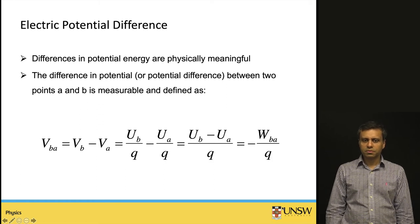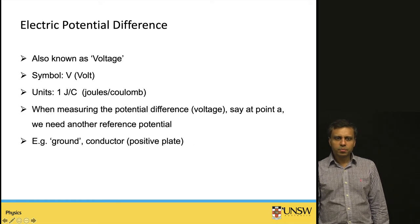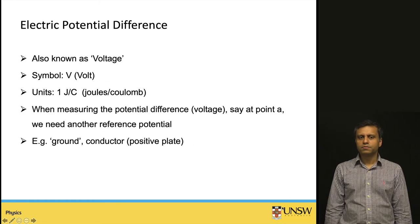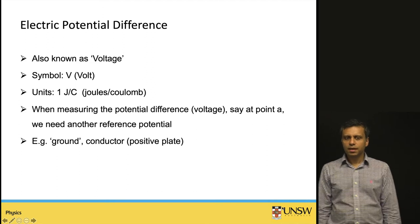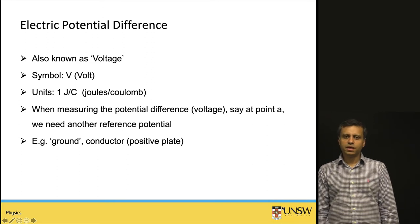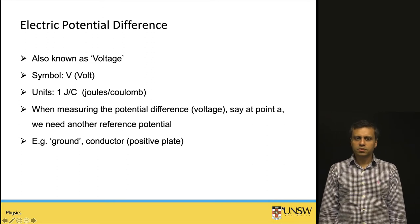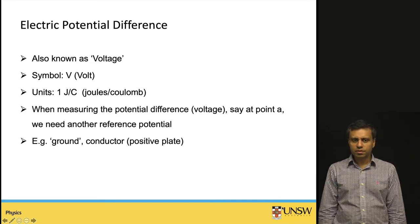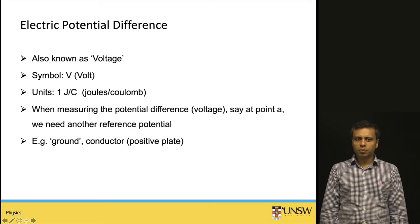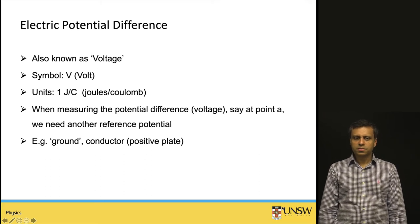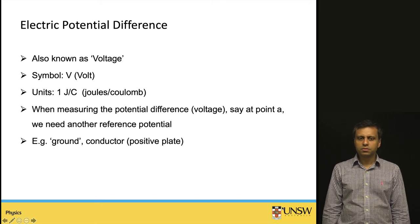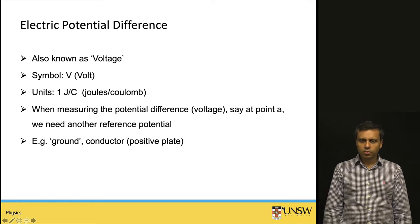This potential difference is very important because in electrical circuits it can be measured and is one of the primary parameters in circuit analysis. Electric potential difference is also known as voltage, with the symbol V, which also stands for volts. Its unit is joule per coulomb — one volt equals one joule per coulomb.